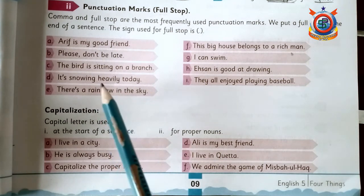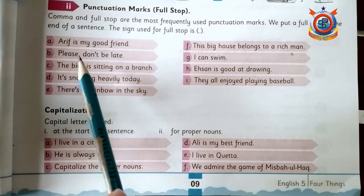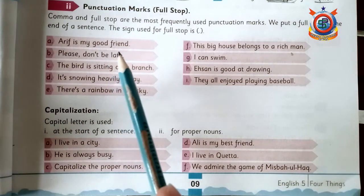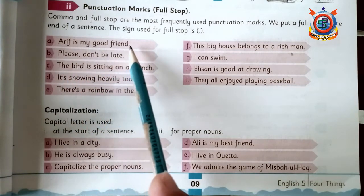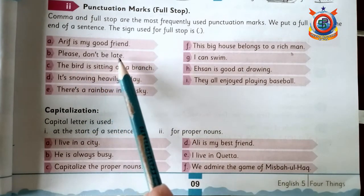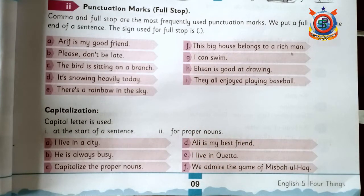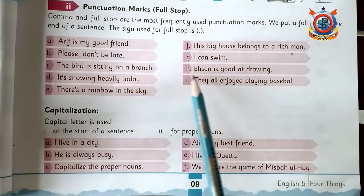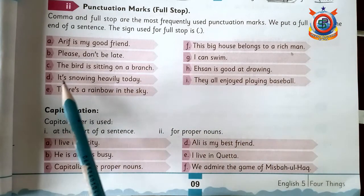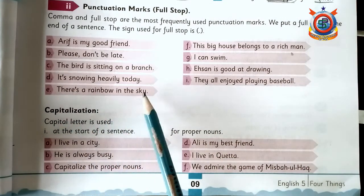Sentence کے last میں ہم full stop استعمال کرتے ہیں۔ تو یہ سارے sentences کے last میں full stop use ہوا ہے۔ For example: 'Arif is my good friend.' — یہاں full stop use ہوا ہے۔ 'I can swim.' — یہاں پر use ہوا ہے۔ 'The bird is sitting on a branch.' 'Ahsan is good at drawing.' 'It's snowing heavy today.' 'They all enjoyed playing baseball.' 'There is a rainbow in the sky.' — ان سارے sentences کے last میں full stop use ہوا ہے۔